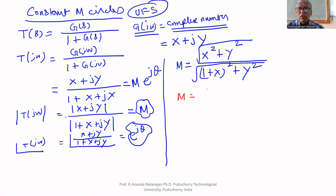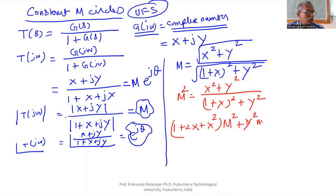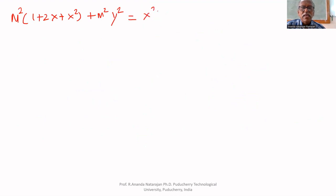So M² = (X² + Y²) / (1 + 2X + X² + Y²). If we cross multiply, M² multiplied by (1 + 2X + X² + Y²) equals X² + Y².